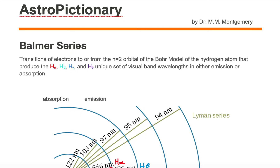Balmer series are transitions of electrons to or from the n equal to 2 orbital of the Bohr model of the hydrogen atom that produce the H alpha, H beta, H gamma, and H delta unique set of visual band wavelengths in either emission or absorption.